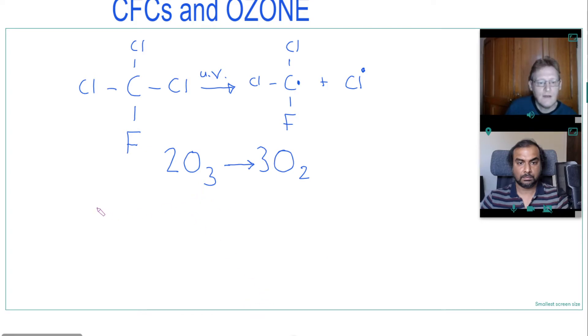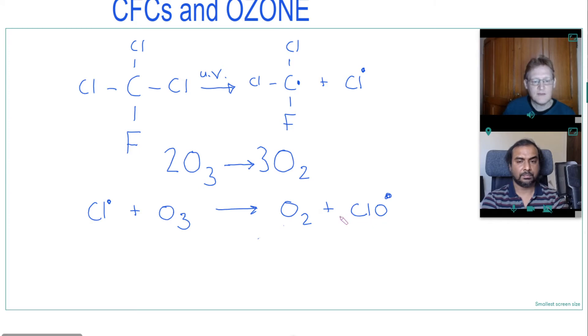And therefore our chlorine free radical will react with our reactant ozone. And we know it turns ozone into oxygen. And our free radical must be ClO free radical to balance one chlorine and one more oxygen required.